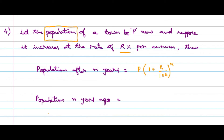Similarly, population N years ago will be P divided by (1 + R/100) whole power N. These are the population type of problems.